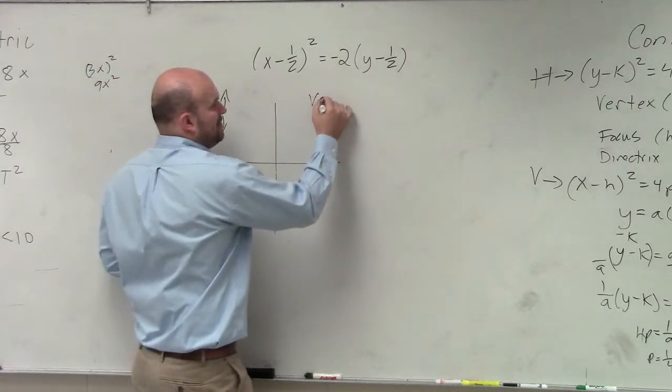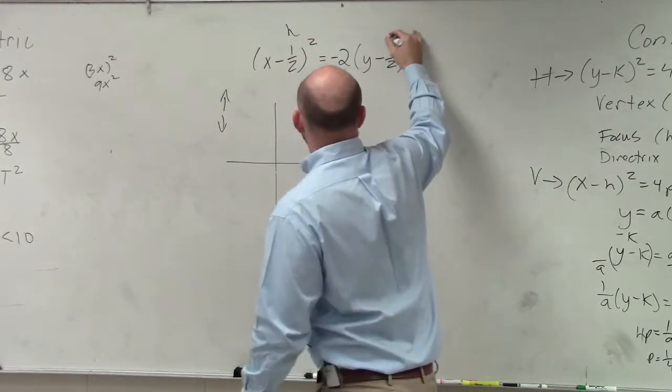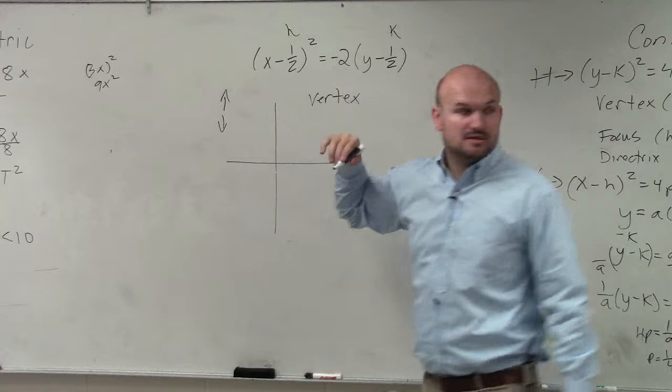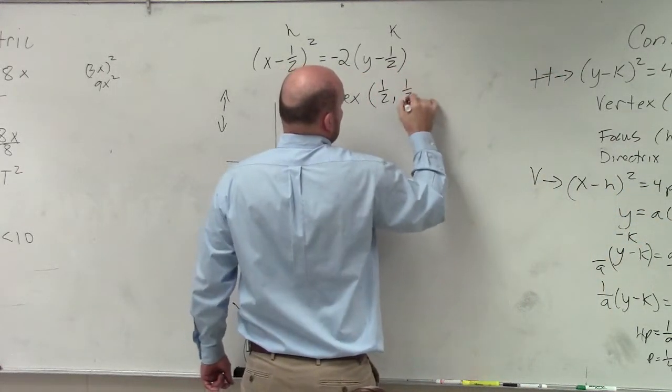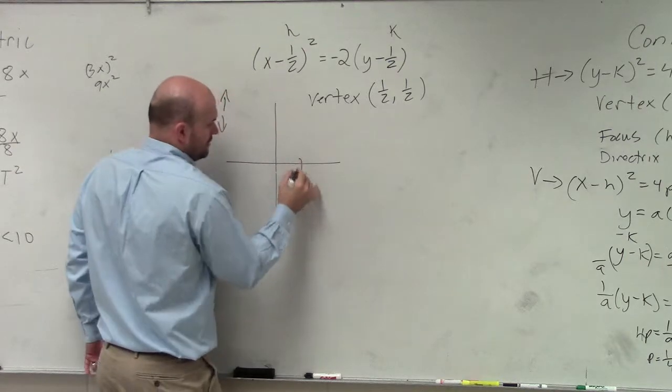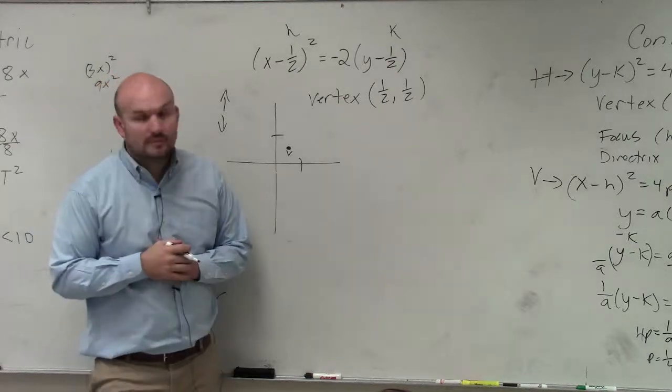Now the next thing I want to do is find my vertex. I know h is always with x and k is always with y. So it's the opposite. So in this case it's at 1 half comma 1 half. So let's put it right there.